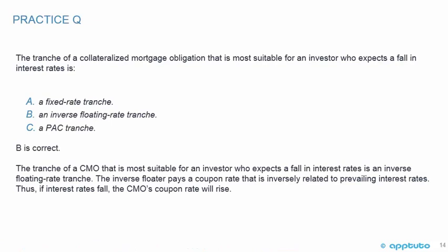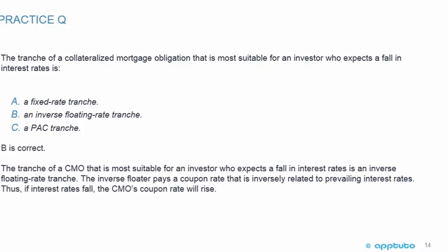The tranche of a CMO most suitable for an investor who expects a fall in interest rates is an inverse floating-rate tranche. The inverse floater pays a coupon rate that is inversely related to prevailing interest rates. Thus, if interest rates fall, the CMO's coupon rate will rise.